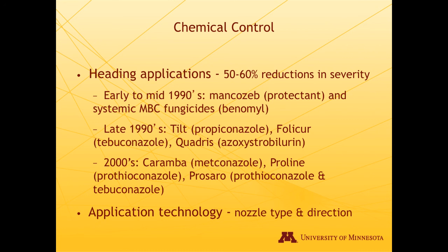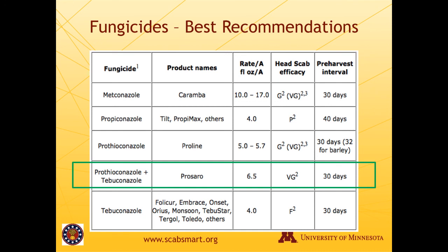We also learned something important about strobilurins like Quadrus: while they reduced disease, they caused plants to increase mycotoxin production. We now recommend that growers don't apply strobilurins at any stage — even applying a strobilurin at the five-leaf stage can increase toxin at harvest. The best fungicide recommendation currently is generally Prosaro, which is coming off patent so generics are now available. The active ingredients are prothioconazole and tebuconazole, and it provides pretty good protection — though we're still only reducing disease levels by about 60%.